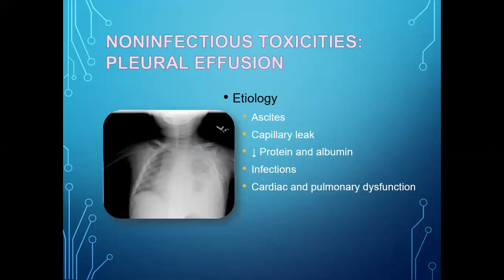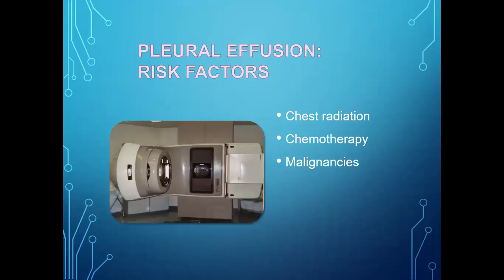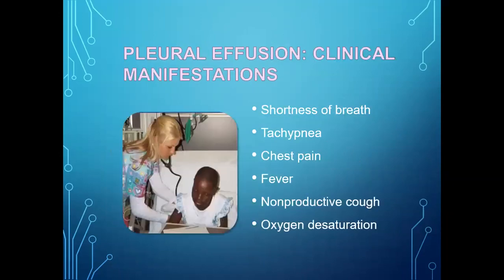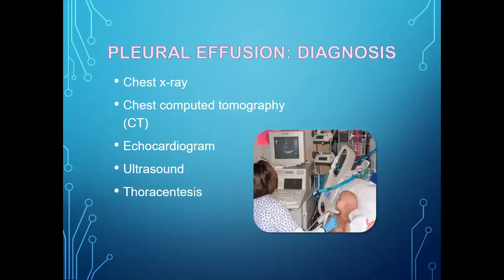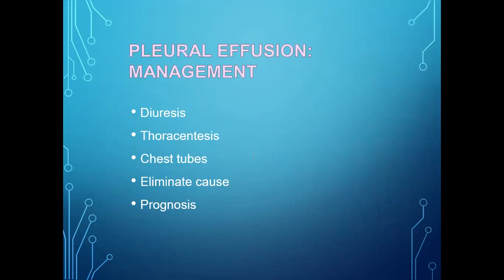Pleural effusion etiology includes ascites, capillary leakage, low protein and albumin, infection, and cardiac and pulmonary dysfunction. Risk factors: chest radiation, chemotherapy, and malignancies. Clinical manifestations: shortness of breath, tachypnea, chest pain, fever, non-productive cough, and oxygen desaturation. Diagnosis: chest X-ray, CT scan, echocardiogram, ultrasound, and thoracentesis. Management: diuretics, thoracentesis, chest tubes, and eliminating underlying causes.